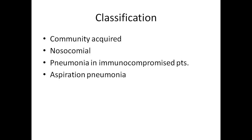Let us see the classification of pneumonia. Pneumonia is classified into: first, community acquired, which is most common; second, nosocomial or hospital acquired pneumonia; third, immunocompromised patients suffering from pneumonia, because the organisms causing pneumonia in immunocompromised patients are totally different from community acquired pneumonia; and the last group is aspiration pneumonia.